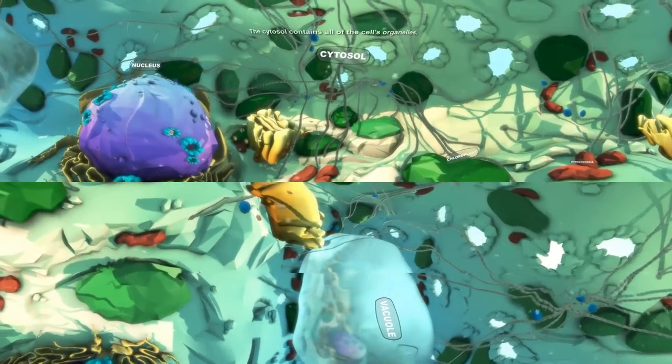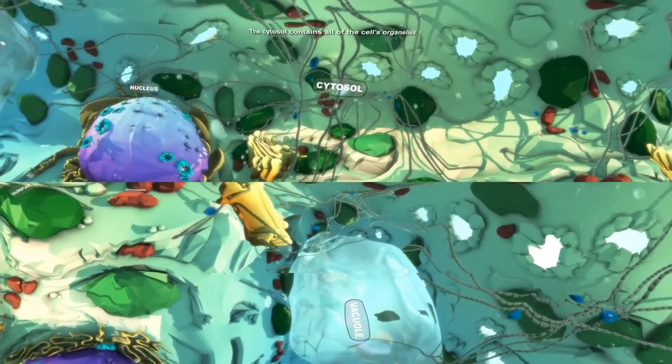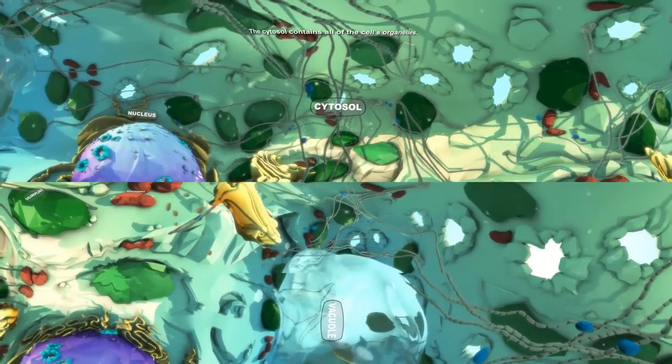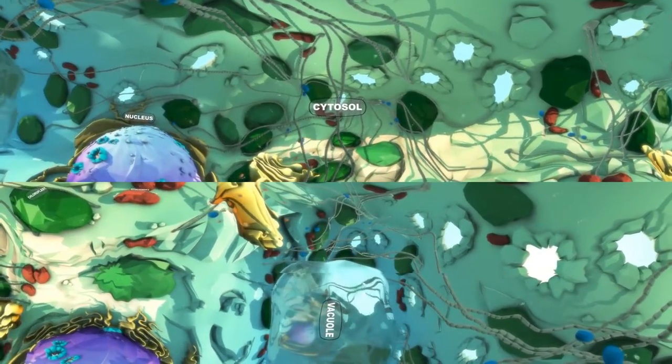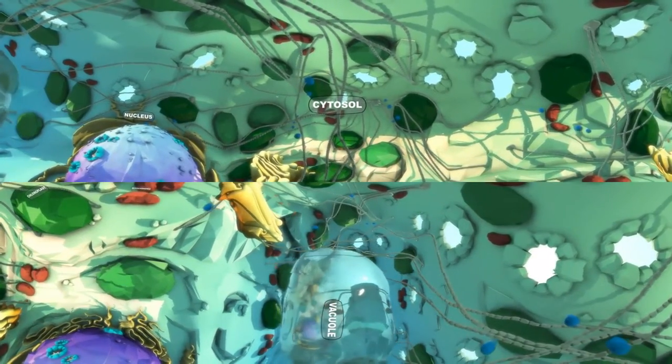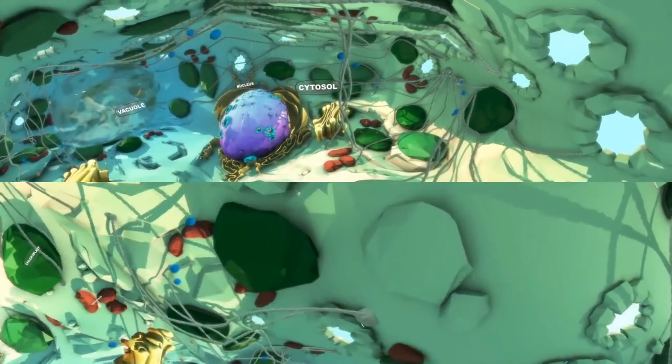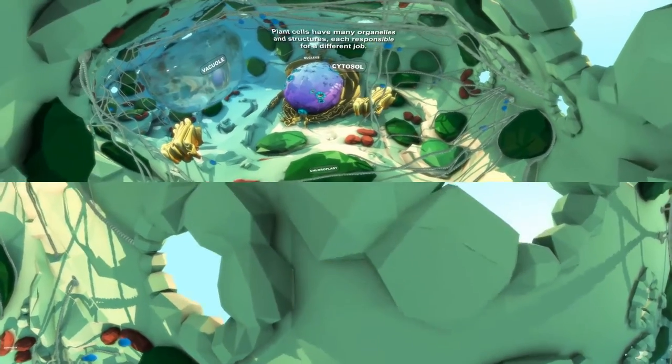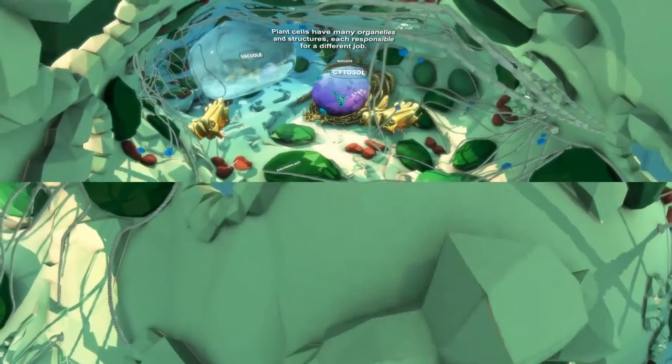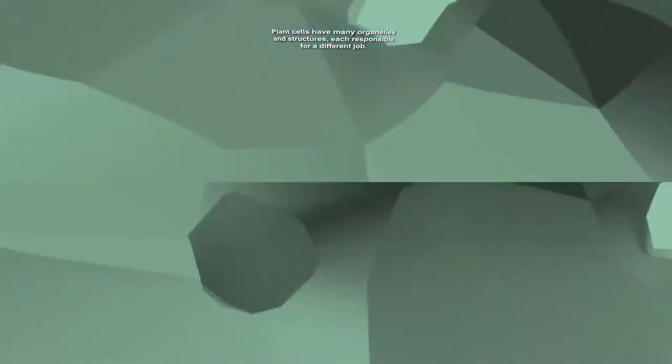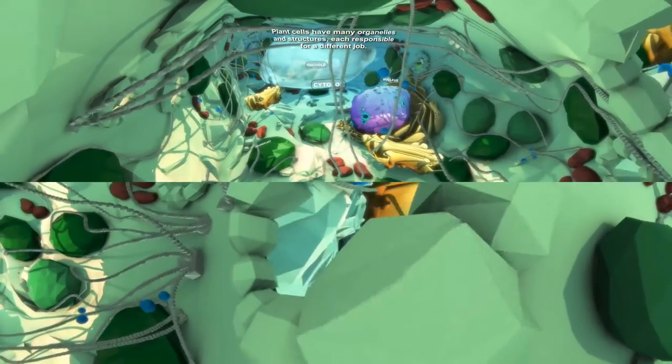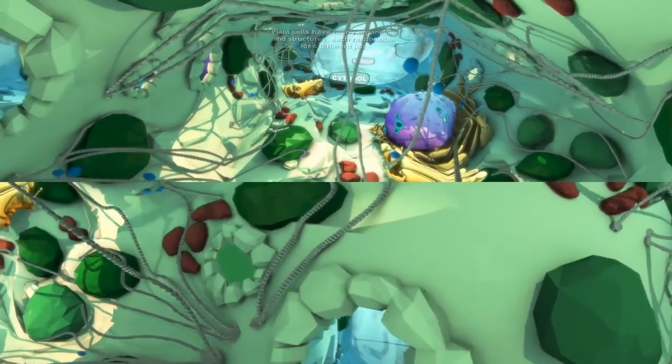All of a cell's organelles float around in the cytosol, a jelly-like substance. Take a moment to look around. A plant cell contains many organelles and structures, each of them responsible for a different job within the cell.